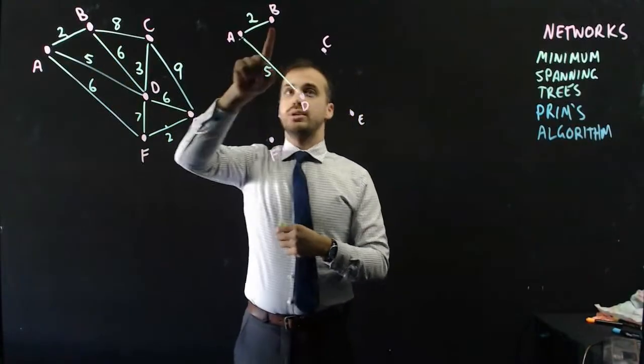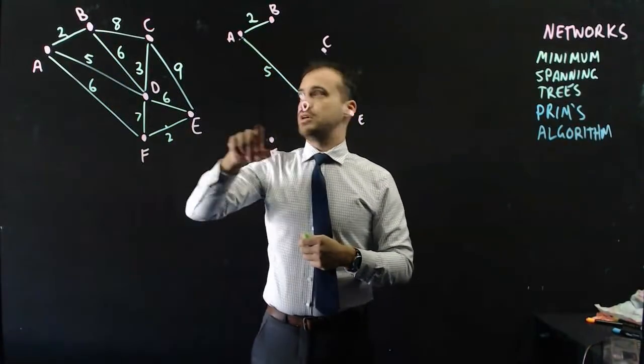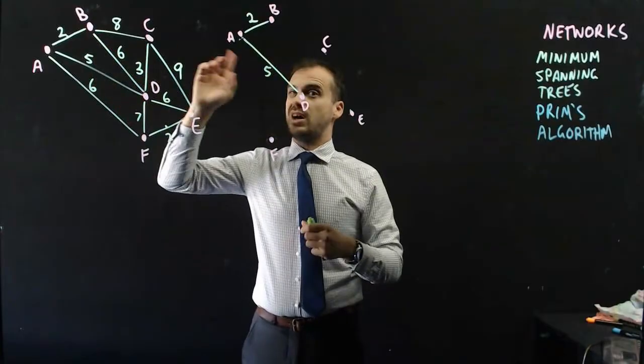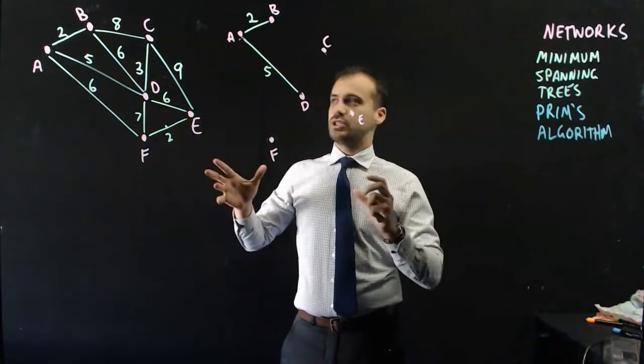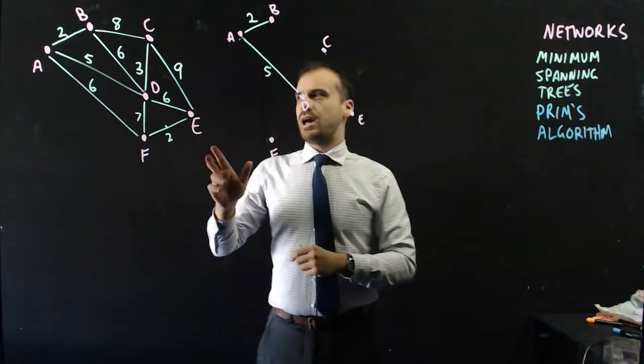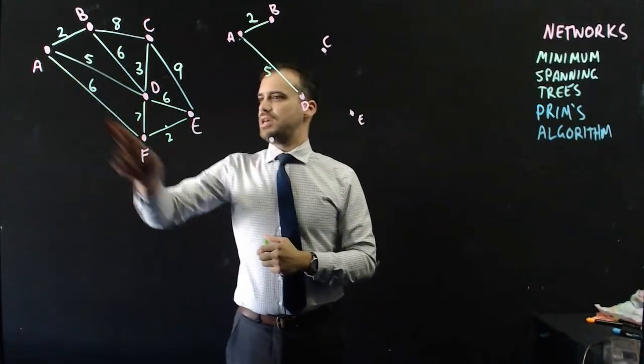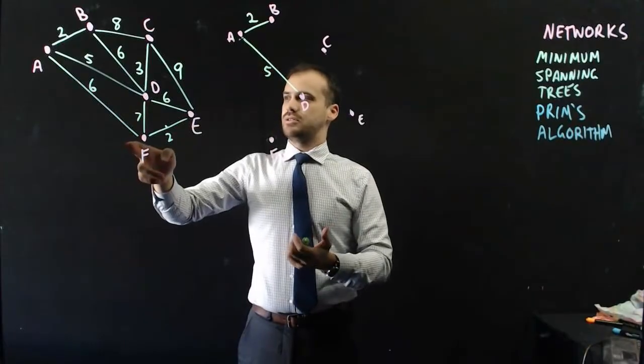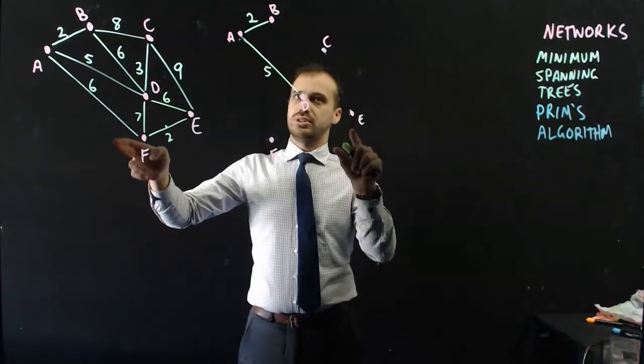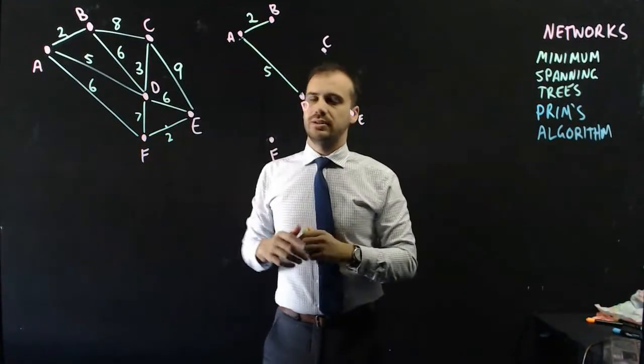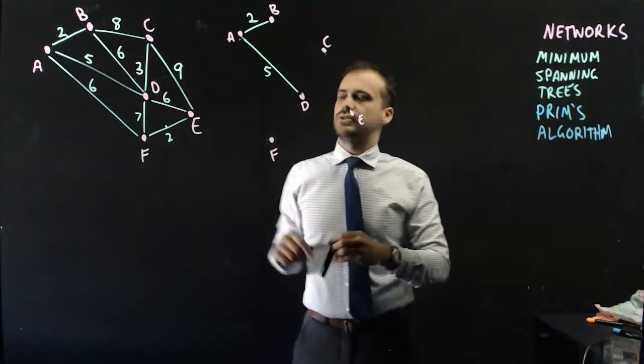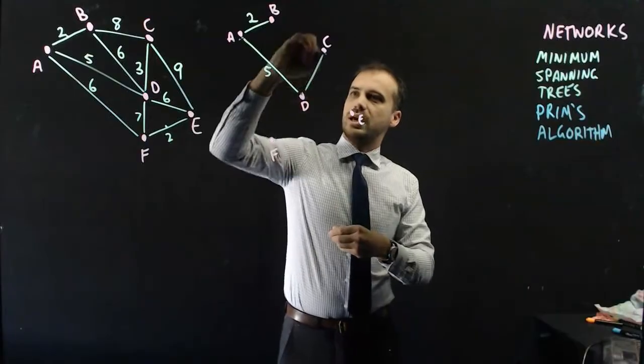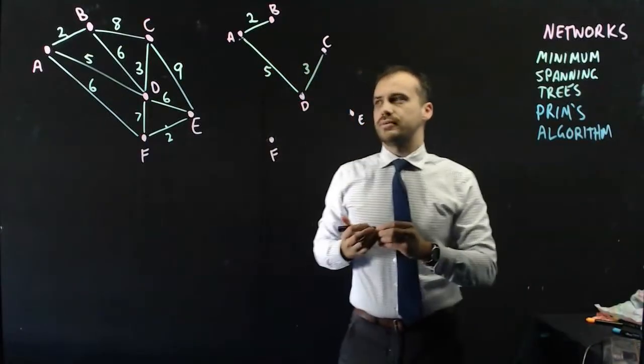B can join itself to C, E, or F. It can join itself to C with 8. There's no other real connections there. What about A? A can join itself to F using 6, and that's all. It can't join to E, and it can't join to C directly. So, the clear winner here is D joining itself to C with an edge of 3.